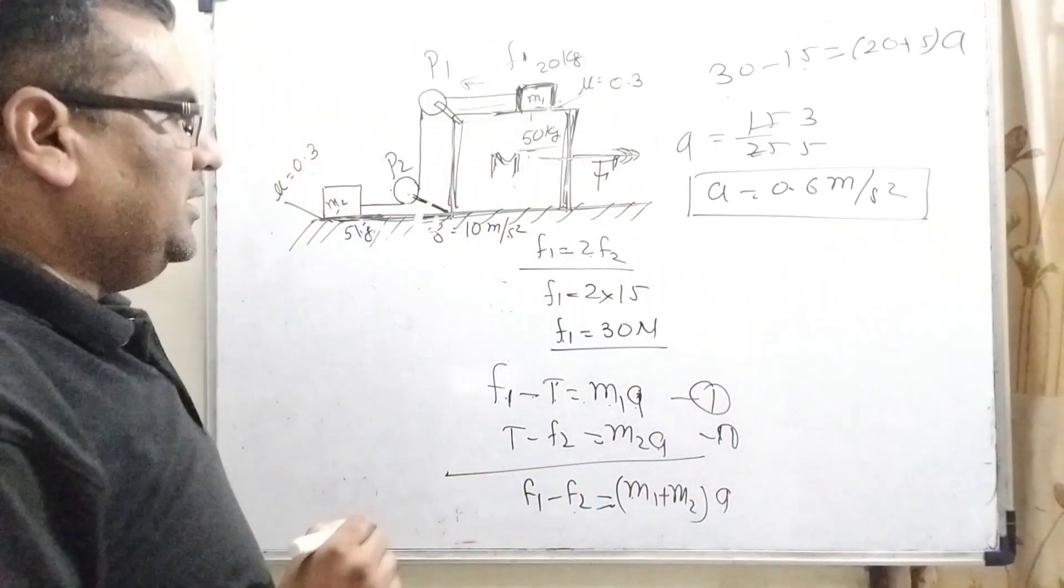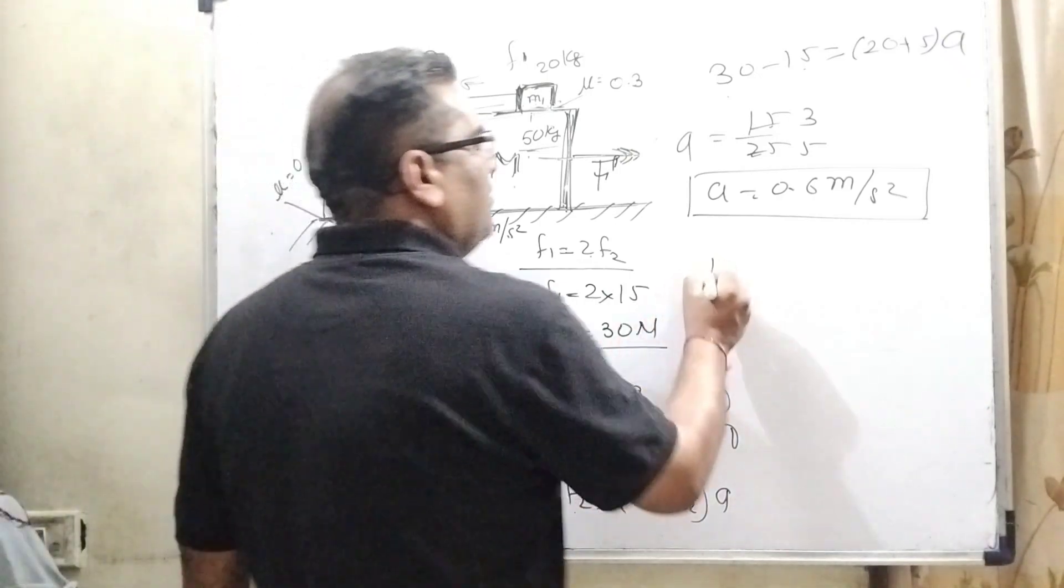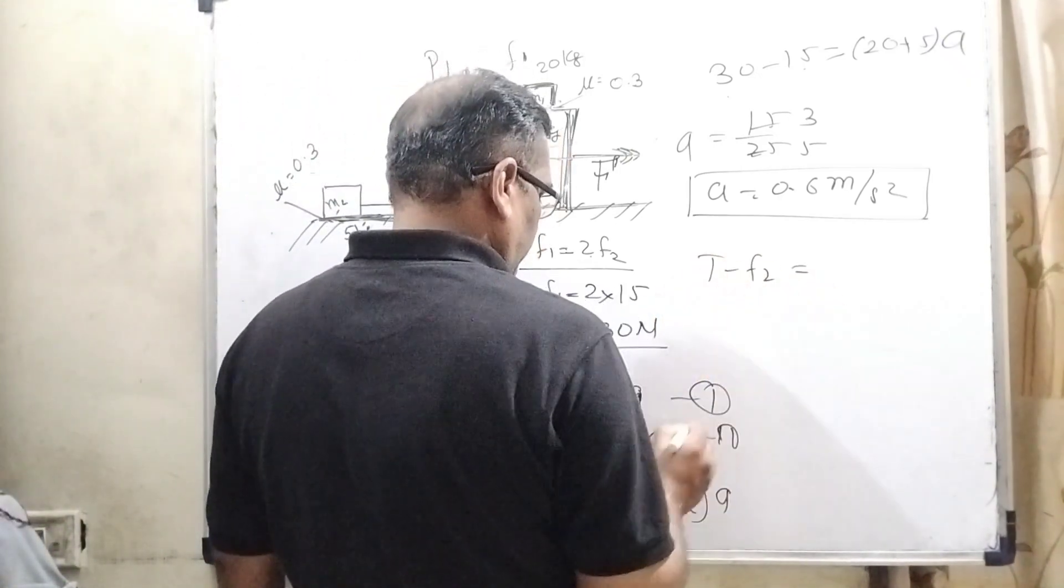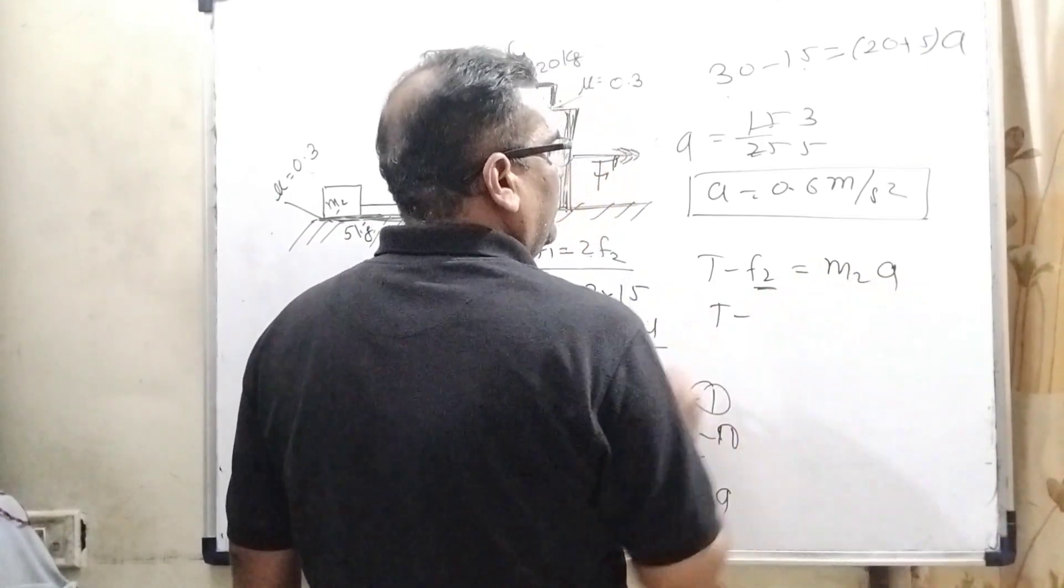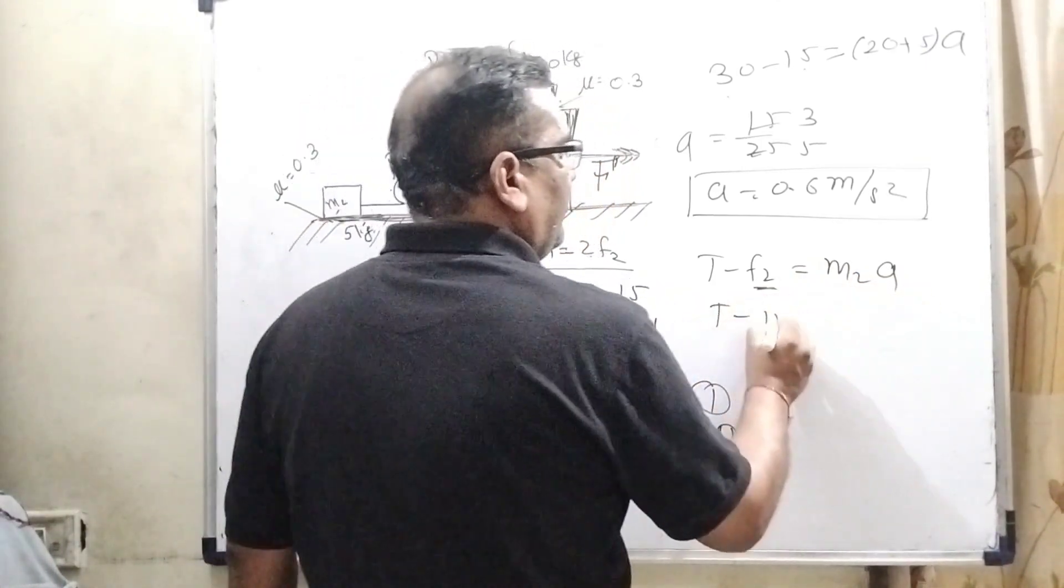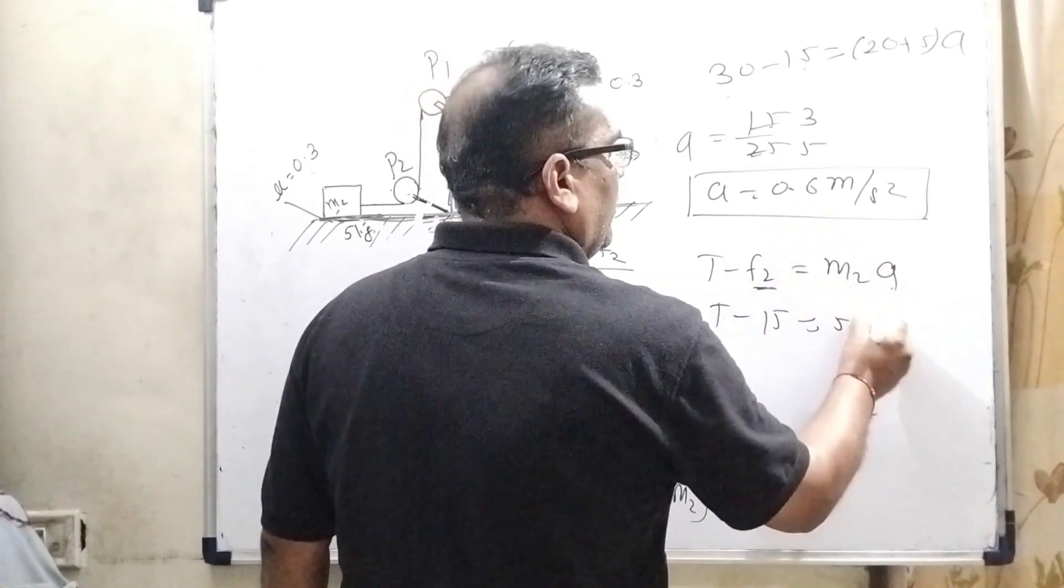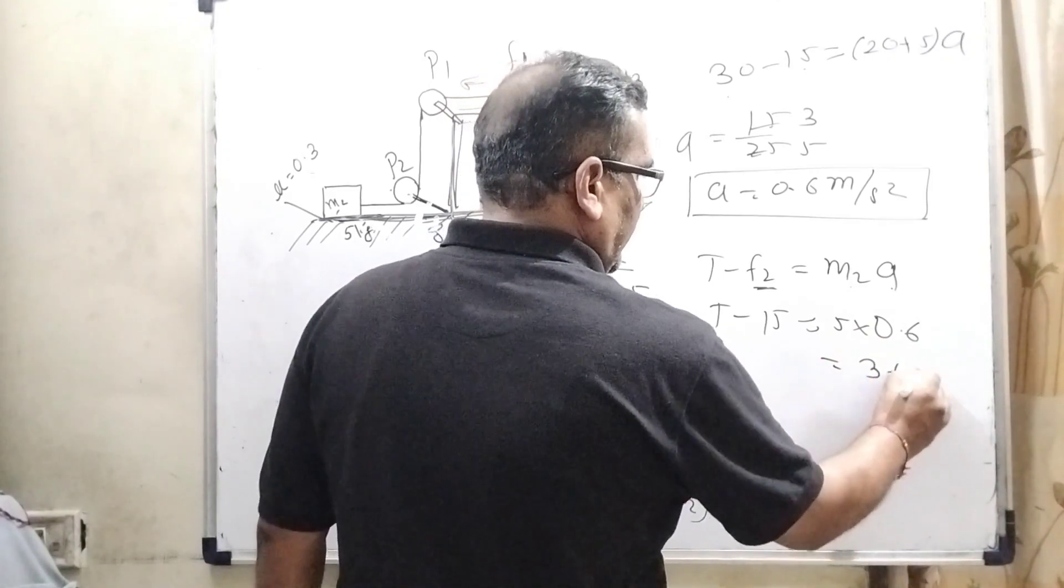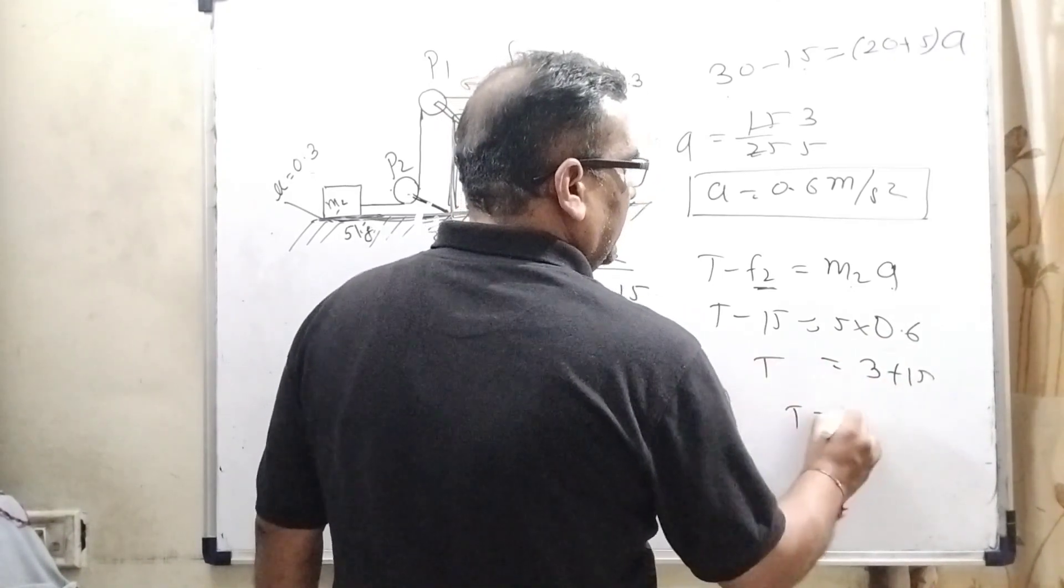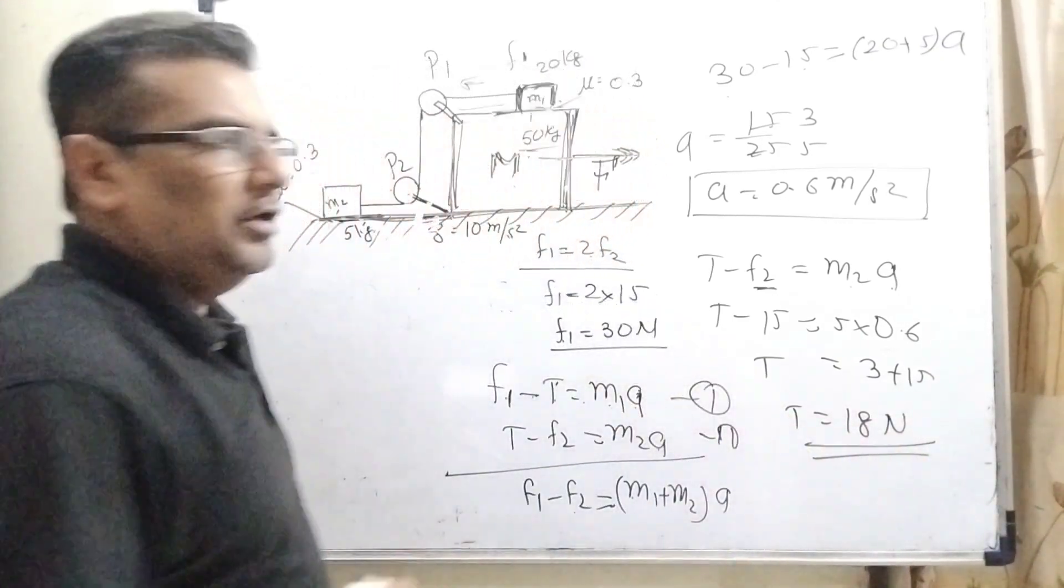Now second things we have to find out the tension. Tension means T minus F2 equal to M2a. Here F2, what is F2? F2 is 15 and it is 5 and acceleration is 0.6 means 3 plus 15 then tension is 18 Newton. So we get tension equal to 18 Newton.